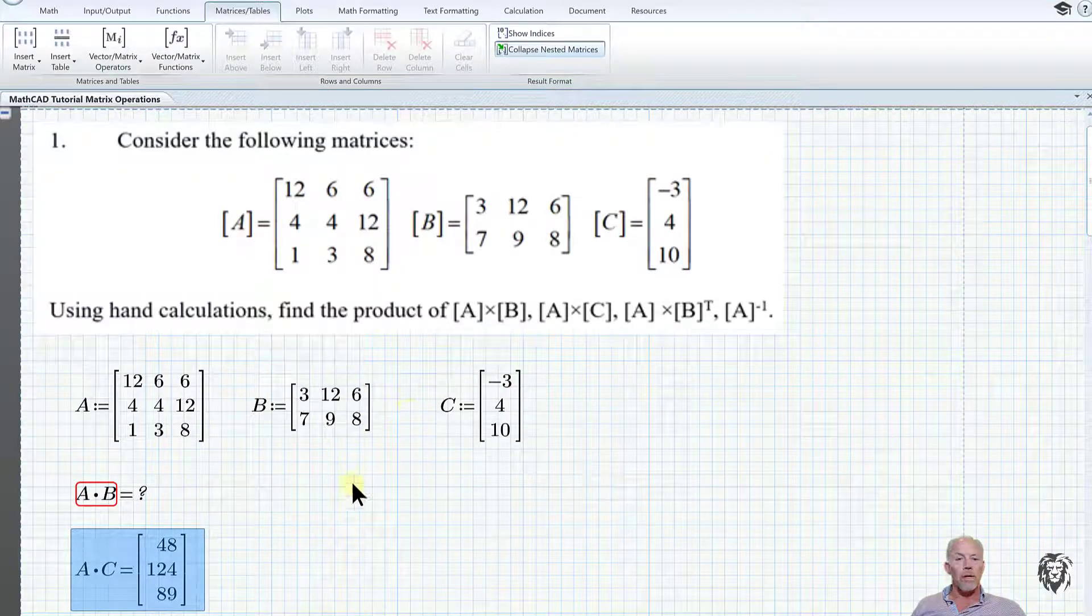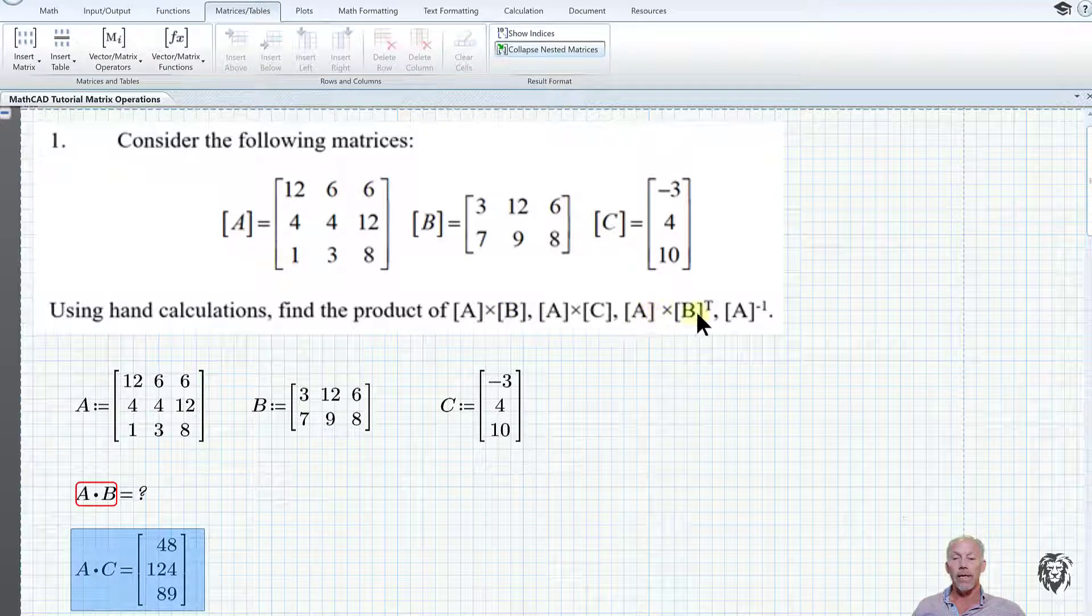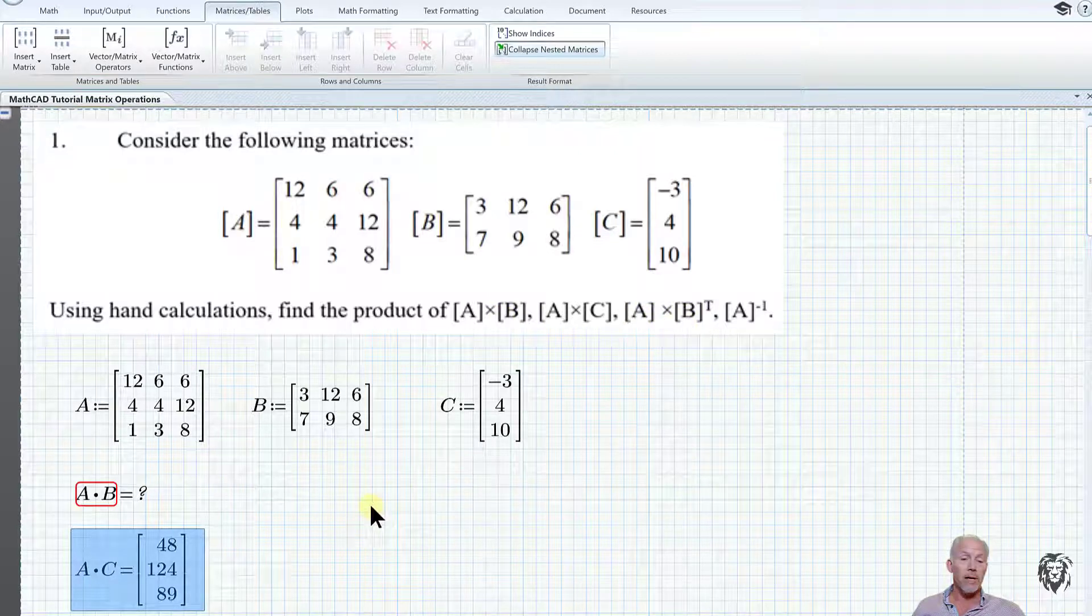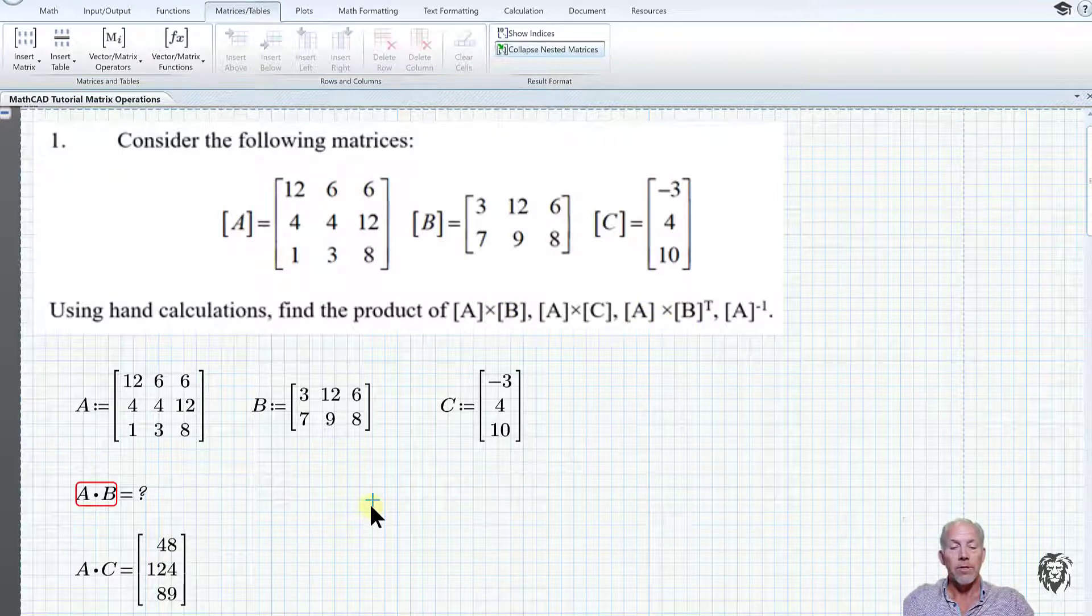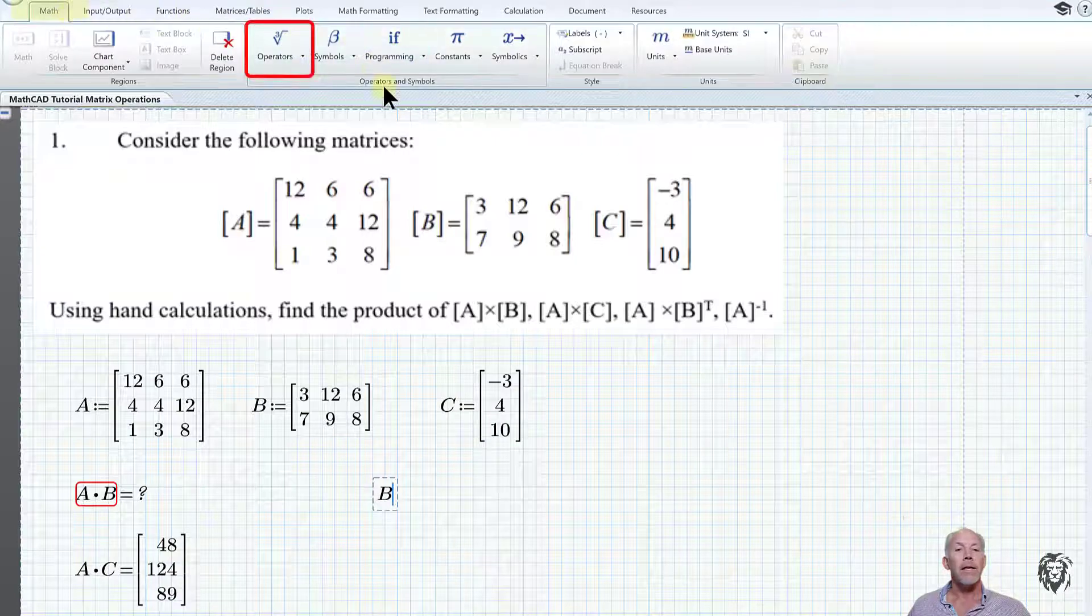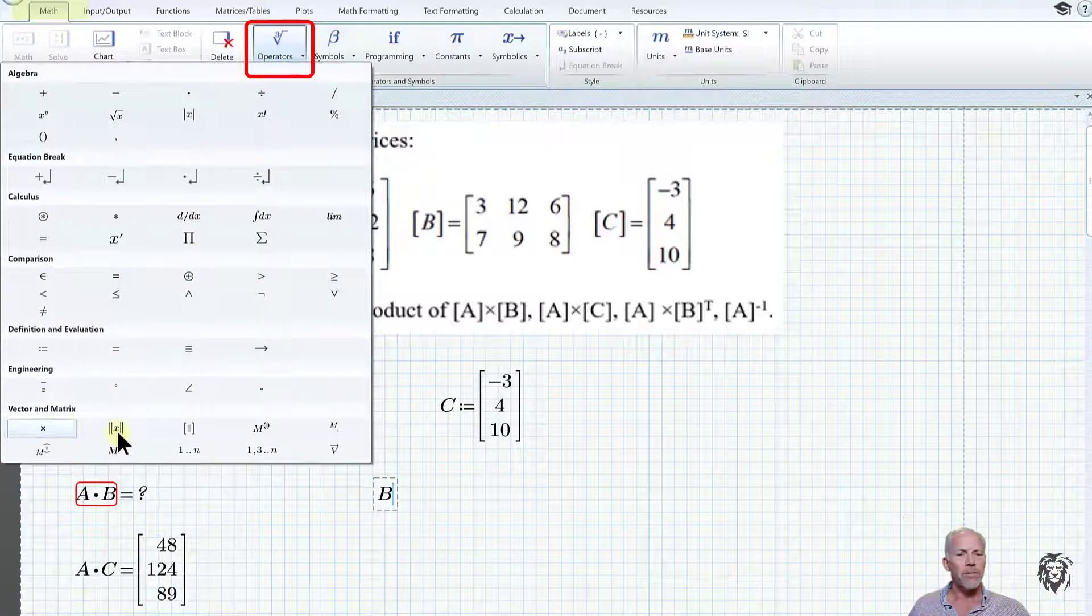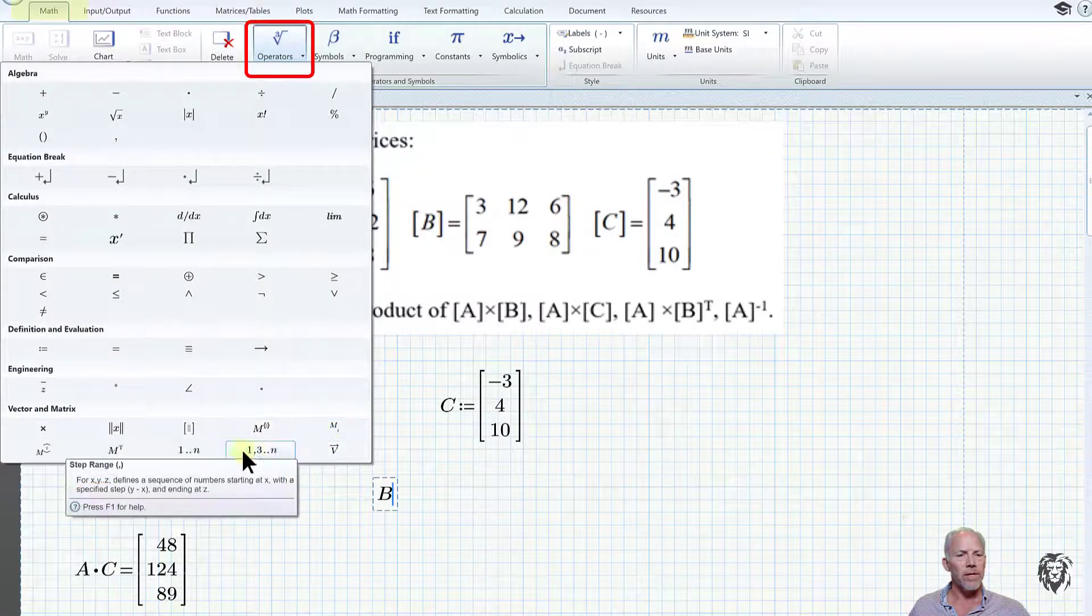Now we want A times B transpose. I can do B transpose by going up to math, into operations, vectors and matrix. Down below you'll see there's transpose here.